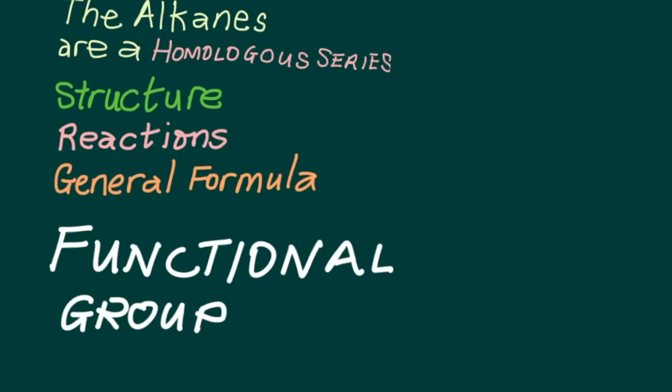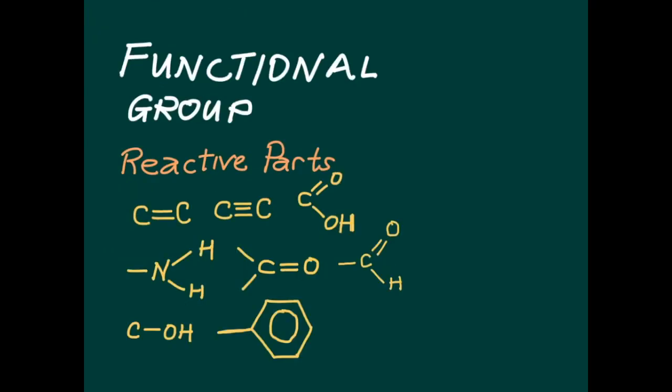In the case of the alkanes, such a functional group does not actually exist, but some other functional groups include: the alkenyl functional group of the alkenes, the alkinyl functional group of the alkynes, the carboxyl functional group of the carboxylic acids, the aldehyde functional group of the aldehydes, the carbonyl functional group of the ketones, the amino functional group of the amines, the hydroxyl functional group of the alcohols, and the phenyl functional group of the arenes. The chemistry of each of these functional groups will be considered in other lessons.